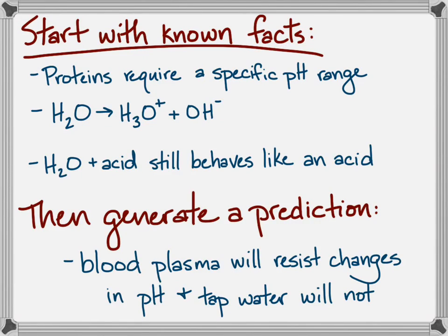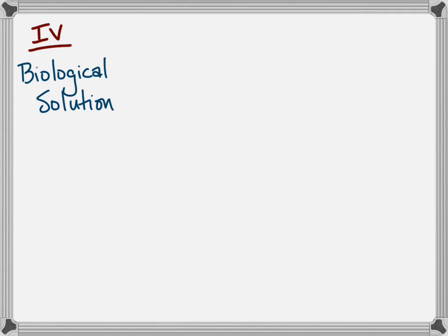So let's make sure we're clear on the details of the pH lab. My IV is the biological solution I choose that's going to be milk, potato, or gelatin for you, and it's blood plasma in my example, with water as the control group. These are categorical variables.